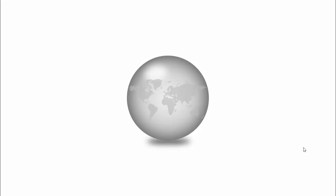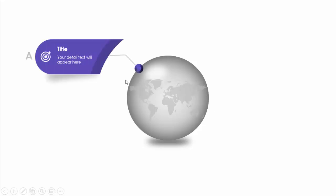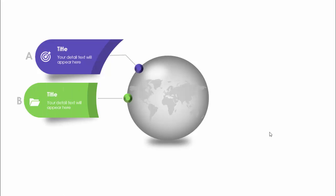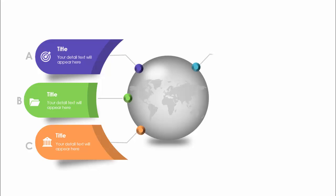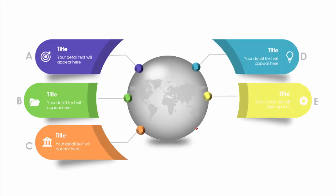In today's tutorial I'm going to show you how to create a six-options infographic slide in PowerPoint. The slide features a sphere with a world map on it and a shadow effect at the bottom. When you click, the first option appears with an option number, title, icon, and detail text with a shadow effect. Each subsequent click reveals the next option in a different color — option two, three, four, five, and six.